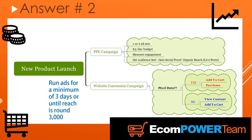Depending on whether your pixel has data — meaning more than 100 purchases, a few hundred add to carts, a few thousand view contents — you can either start with one ad set for view content and one for add to cart if your pixel does not have data. If your pixel does have data, you can start with add to cart and purchase. I like to run those two different ad sets in correlation with one another and let them go after each other to see which one performs better. I like to run these ads for a minimum of three days or until I reach around 3,000 people.